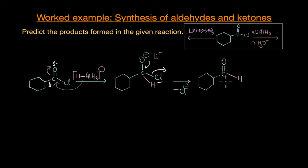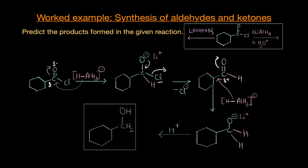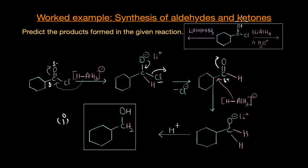Because of the chlorine leaving group, the tetrahedral intermediate immediately collapses with the elimination of the chloride ion, giving us an aldehyde. This aldehyde is also a pretty reactive carbonyl compound, and it reacts again with lithium aluminium hydride, where the hydride ion attacks the electron-deficient carbonyl carbon and the pi electrons move towards the oxygen atom, giving us another tetrahedral intermediate. The last step is acid hydrolysis, where the alkoxide gets protonated, giving us a final primary alcohol. This complete reduction occurs because we have a highly reactive substrate and a very reactive reducing agent.